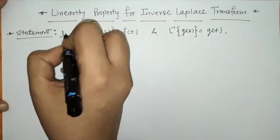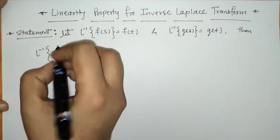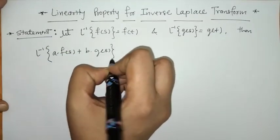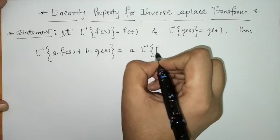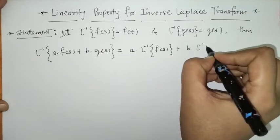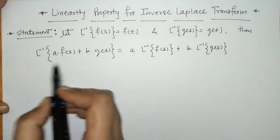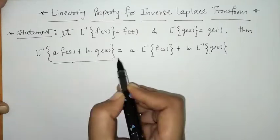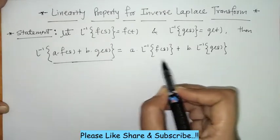then L⁻¹{a·F(s) + b·G(s)} = a·L⁻¹{F(s)} + b·L⁻¹{G(s)}, where a and b are constants. What this means is that the inverse Laplace transform can be operated on a sum by distributing it separately on F(s) and G(s).